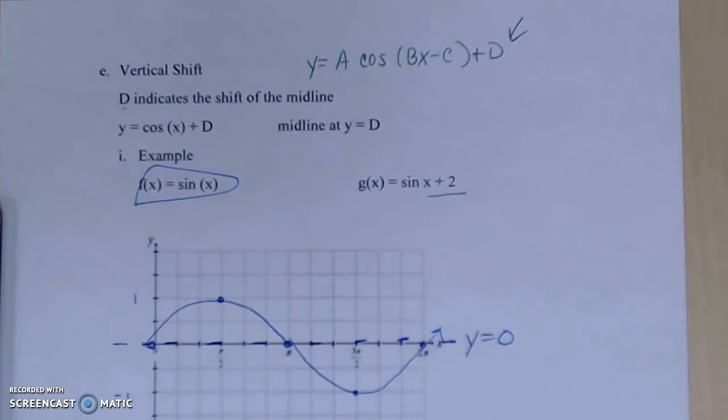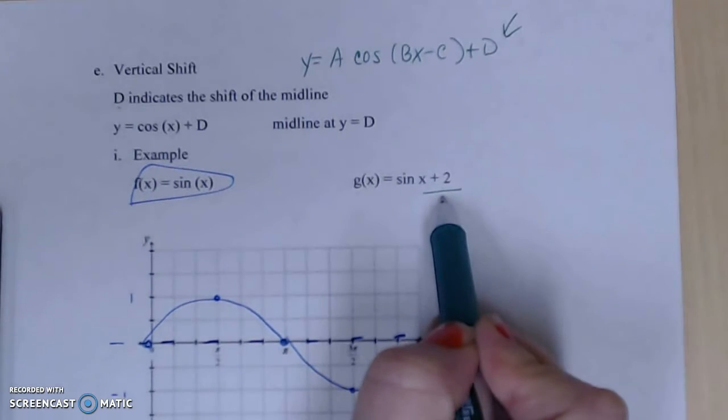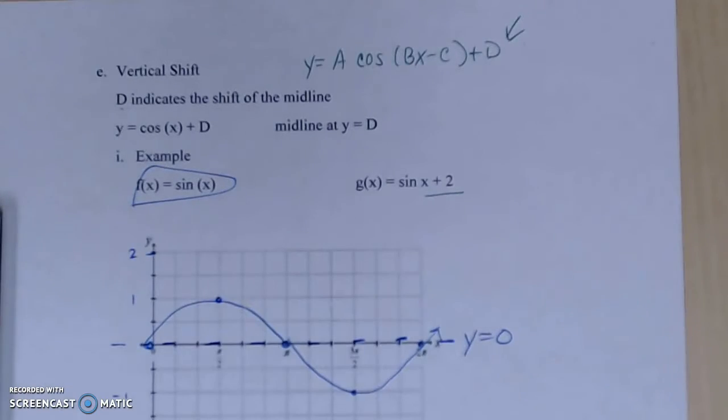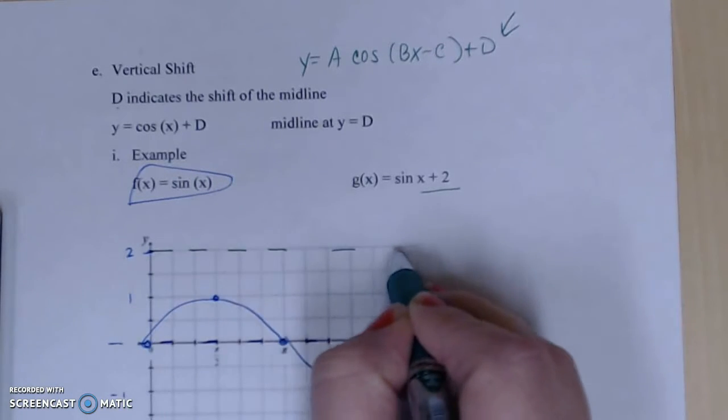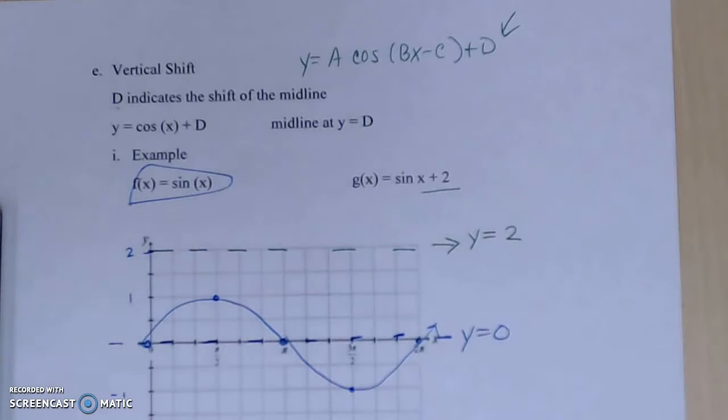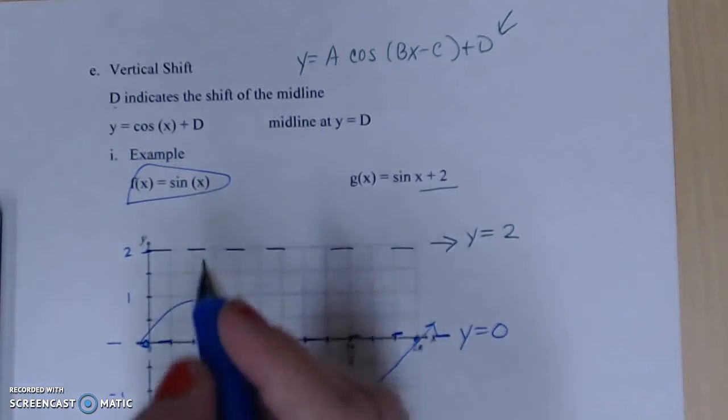At Y equal to 0 is its midline – the middle between the maximum and the minimum. So if I move this midline up 2 units – here's 2 – that new midline would be up here at Y equal to 2. Notice I have no horizontal shifts, I'm not going to change the amplitude or the period, so it's still going to start here.